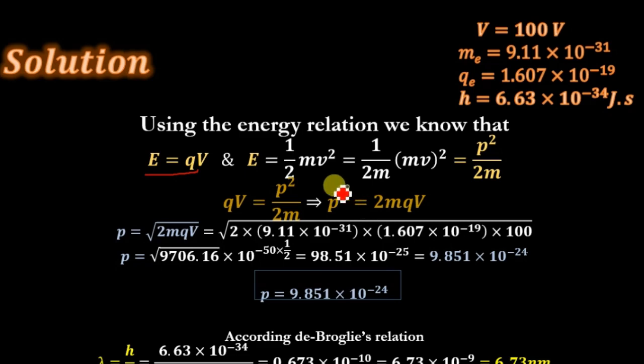Taking the square root on both sides, we get p = √(2mqV). Here m is the mass of electron, q is the charge on electron, and V is the potential difference across which the electron is accelerated.